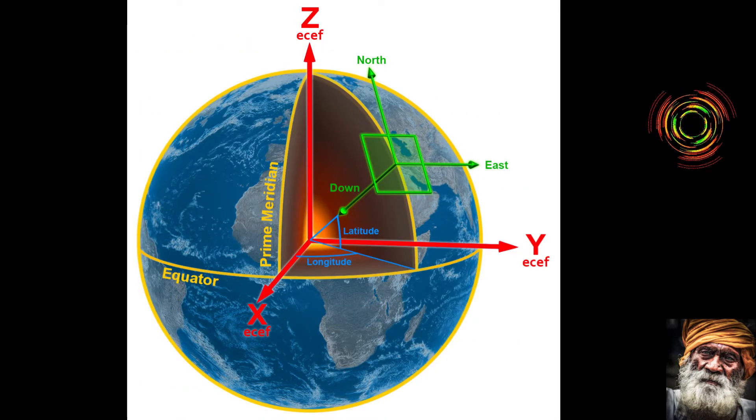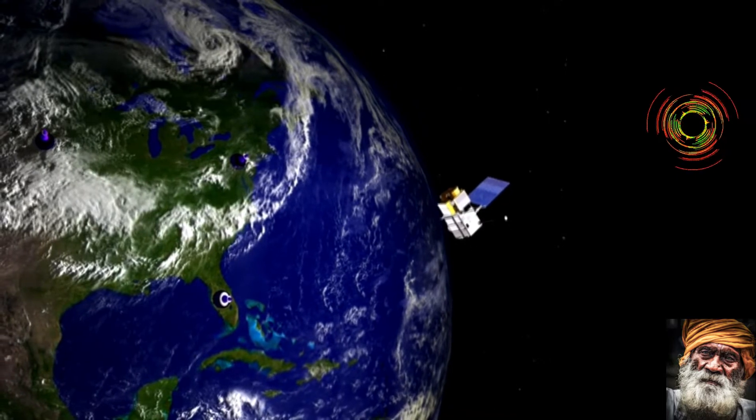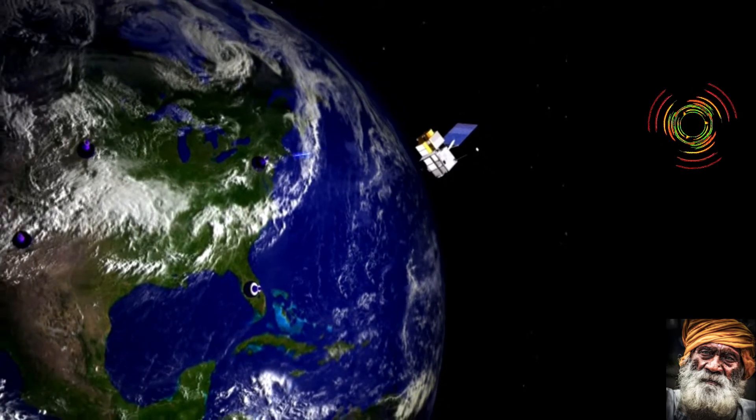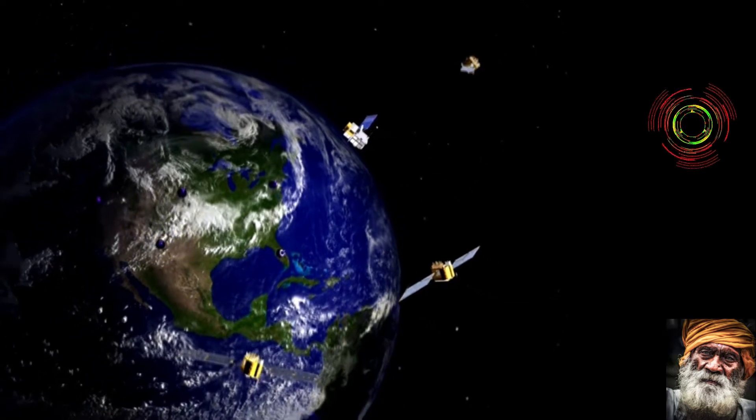Now this WGS 84 is an earth-centered, earth-fixed terrestrial reference system. So it is based on a consistent set of constants and model parameters that describes the Earth size, shape, and gravity as geomagnetic fields. Just so you know that these datums are not fixed and they are being updated almost constantly. As our technology improves, we can accurately measure tiniest variation of gravity on Earth's surface and we update our gravity models like Earth Gravitational Model 2008 or EGM 2008.